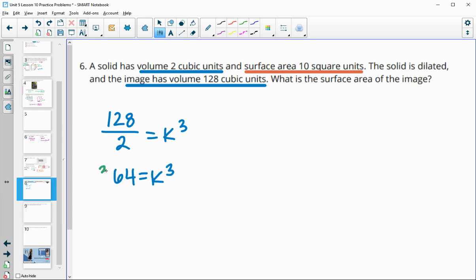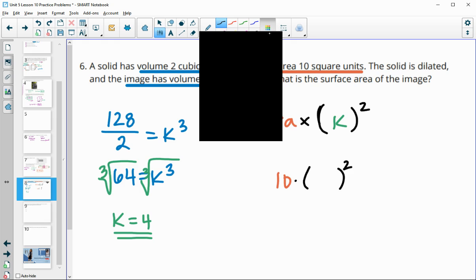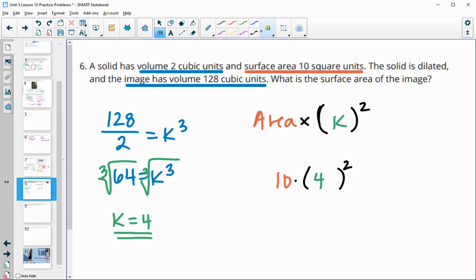When we have the area, we will do the area times the scale factor squared to get our new area. Our original area here is 10, so we will multiply that by 4 squared. We're doing 10 times 16. So our new area is going to be 160 units squared.